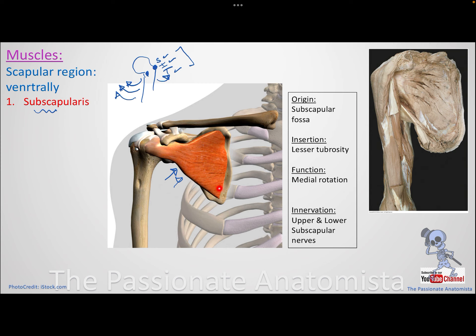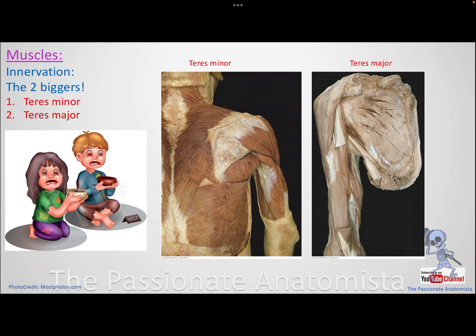What is the innervation of the subscapularis? It has innervation from two nerves - upper and lower - called the upper and lower subscapular nerves. The subscapularis is an internal rotator. Together with the SIT muscles, all four form the rotator cuff.